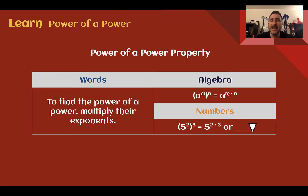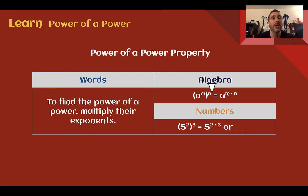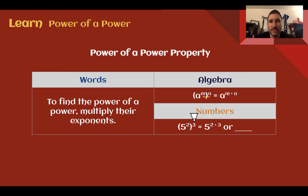This is called the power of a power property. To find the power of a power, you multiply the exponents. When you see something to an exponent inside parentheses with another exponent immediately outside, you multiply those exponents. So if we had 5 to the 2nd power raised to the 3rd power, we do 2 times 3 and get 5 to the 6th power.